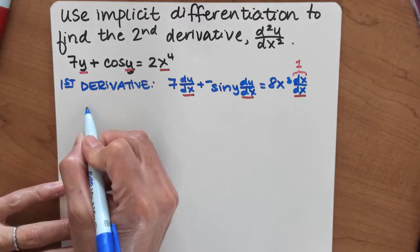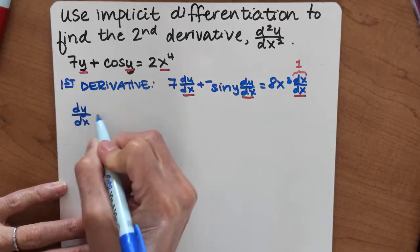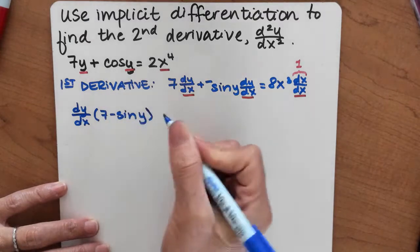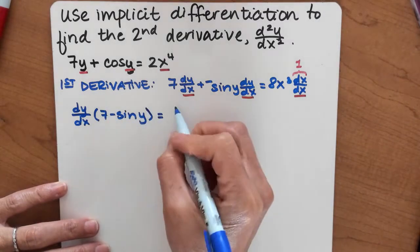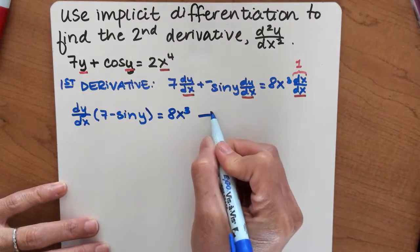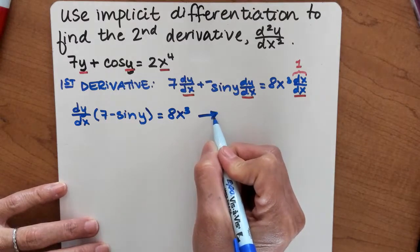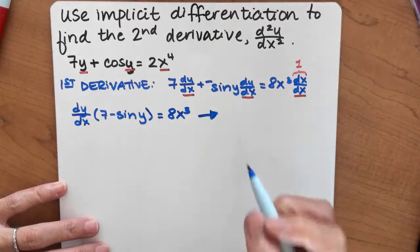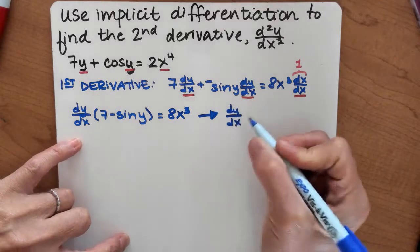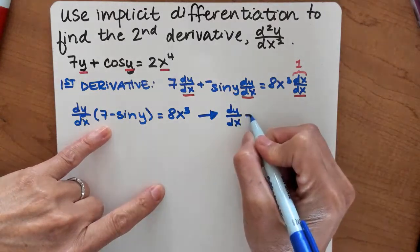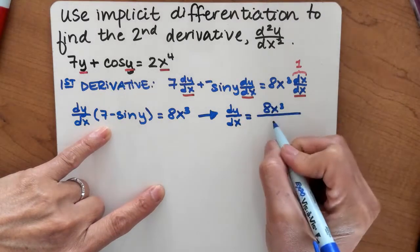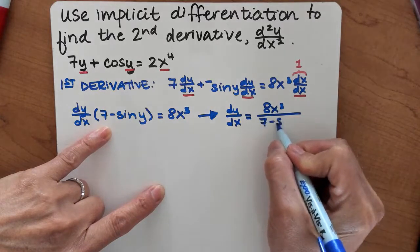Now I'm going to factor out the dy/dx, and I'll be left with 7 minus sine of y. On the other side, I'm left with 8x cubed, because the dx/dx is gone — it disappeared because it equals 1. Lastly, I'm going to isolate dy/dx by dividing both sides by 7 minus sine y, so I get that my first derivative is 8x cubed over 7 minus sine y.